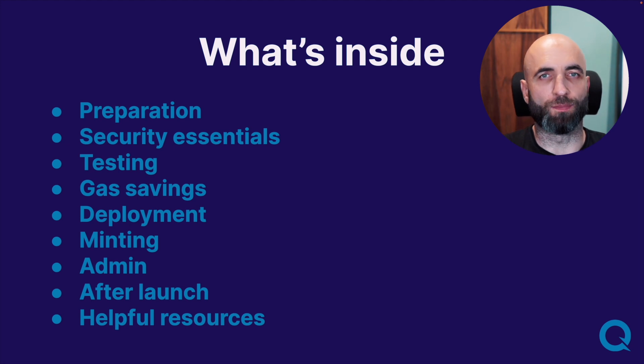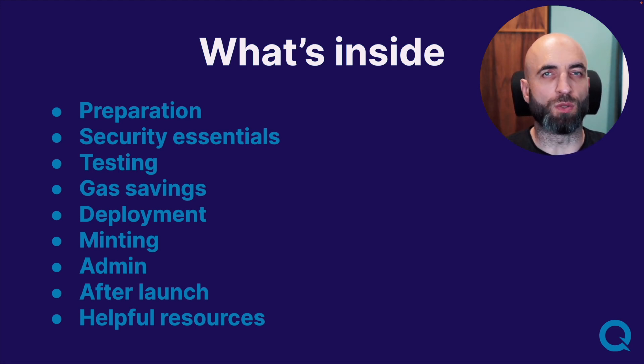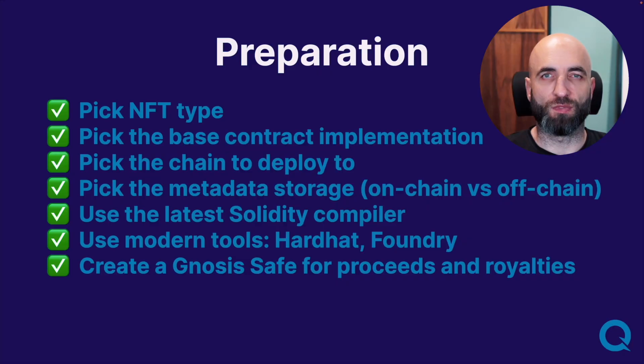So what's inside? All 73 points are divided into eight categories, and at the end there is a helpful resources section with good smart contract examples, resources for further study, and even a whole roadmap on how to learn writing NFT smart contracts if you are starting out. First, let's start with the preparation section. One of the very first things you need to do when writing a smart contract is to pick an NFT type.